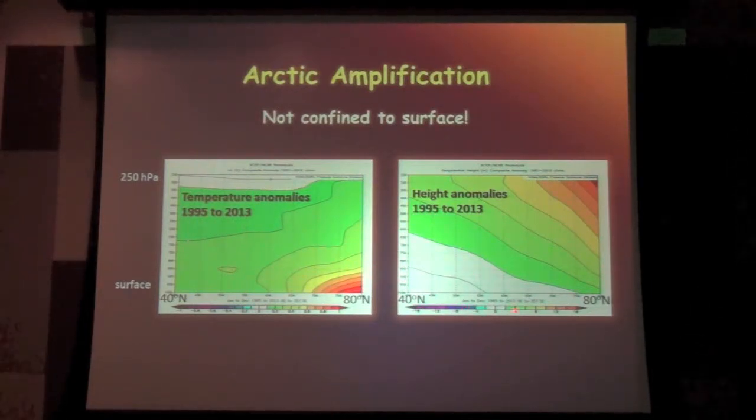The reason that's important is because it affects the height of pressure levels up in the atmosphere. You can think of this warm air. We know that warm air expands, right? So as this warm air down near the surface expands, it bumps up these layers in the atmosphere above it. And that's what we're seeing here. These same colors indicate that the tops of these layers of the atmosphere are actually getting bumped up.